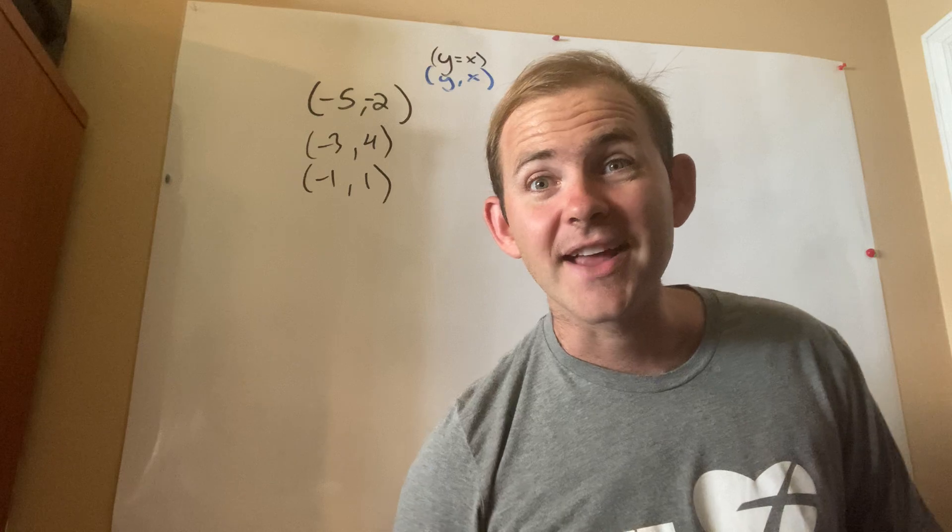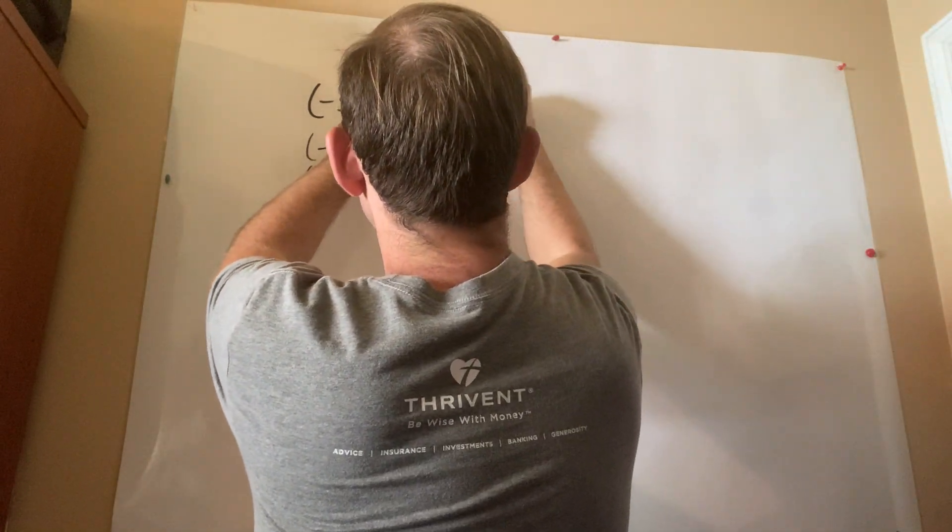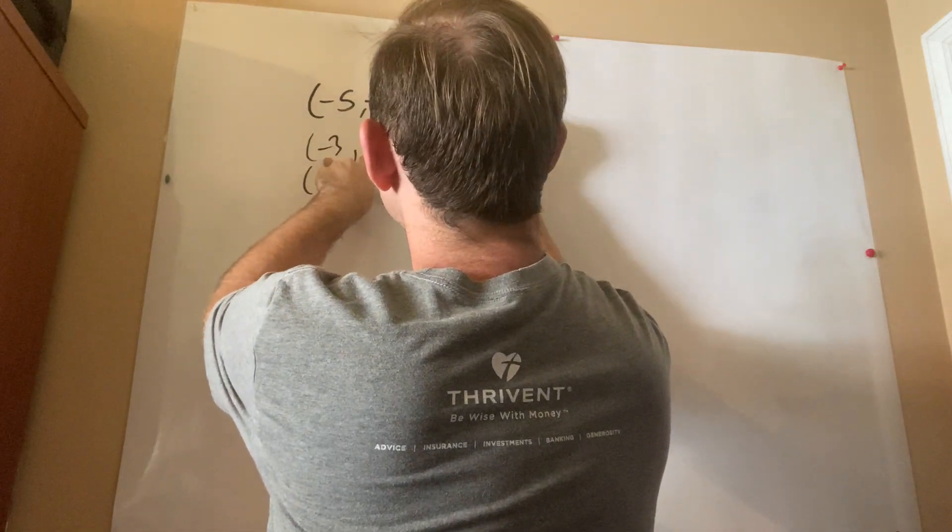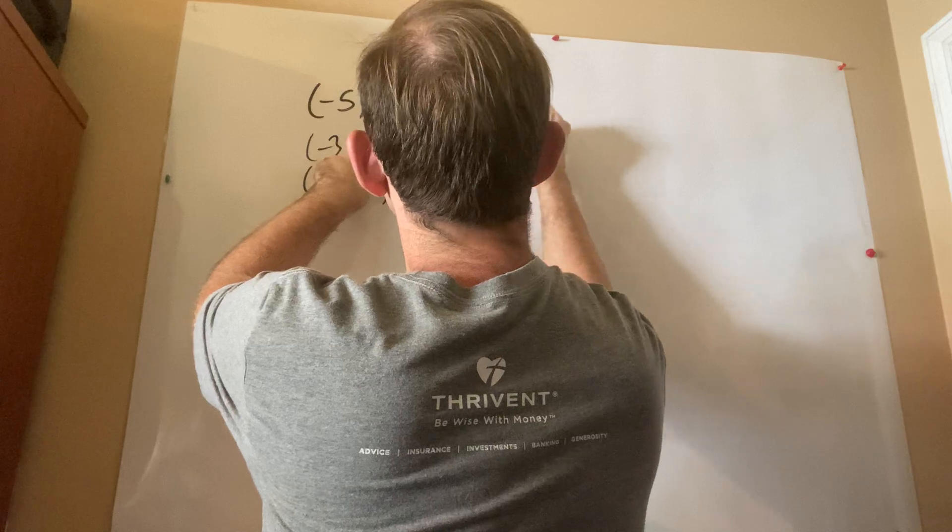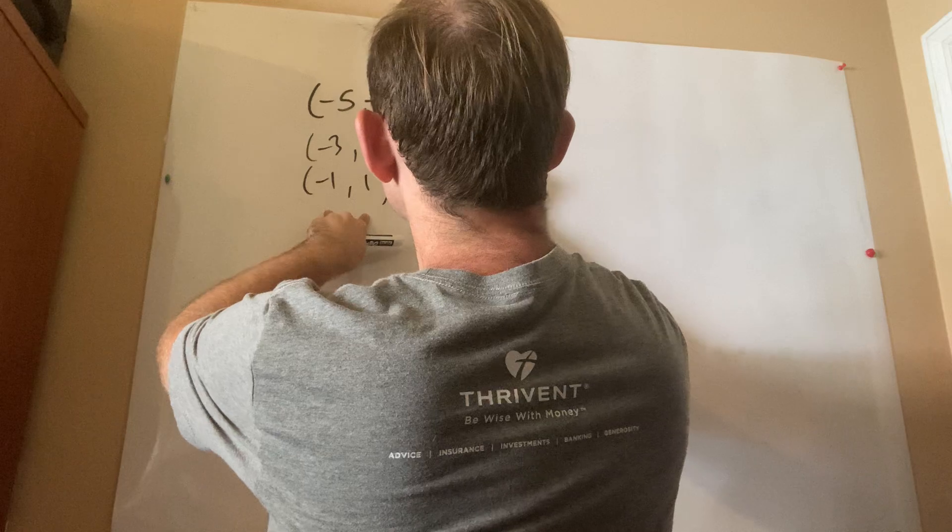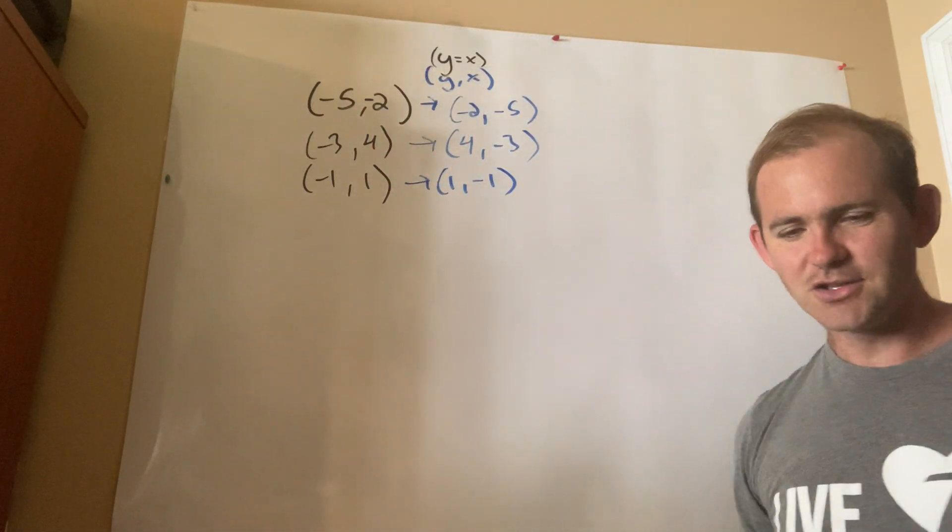The coordinate rule for y equals x is the switch, where literally all I got to do is just switch the two coordinates. So guess what? Instead of being negative 5, negative 2, this would just be negative 2, negative 5. Instead of being negative 3, comma 4, this would just be 4, comma, negative 3. And this one, instead of being negative 1, comma 1, it would just be 1, comma, negative 1.